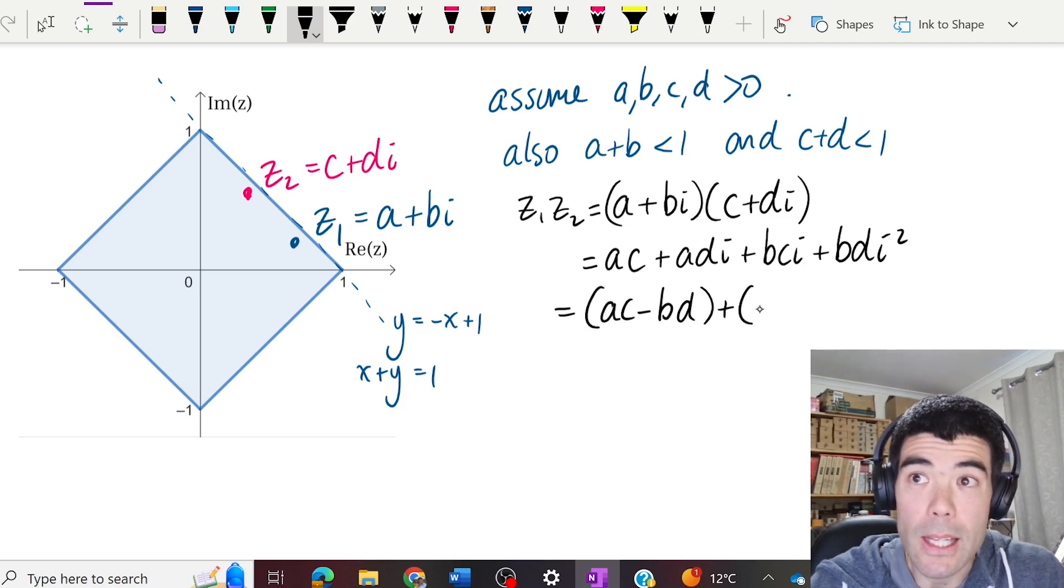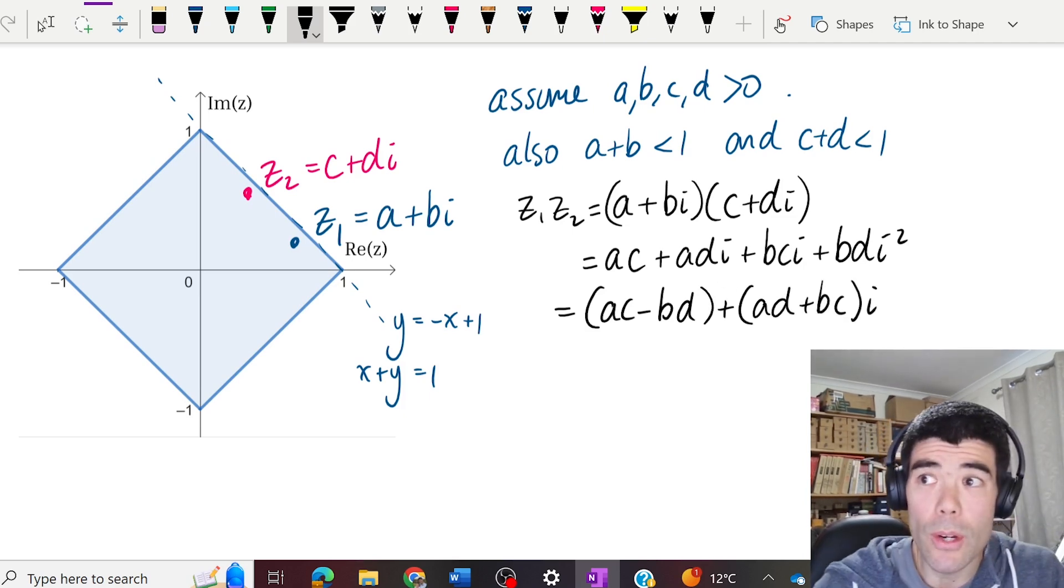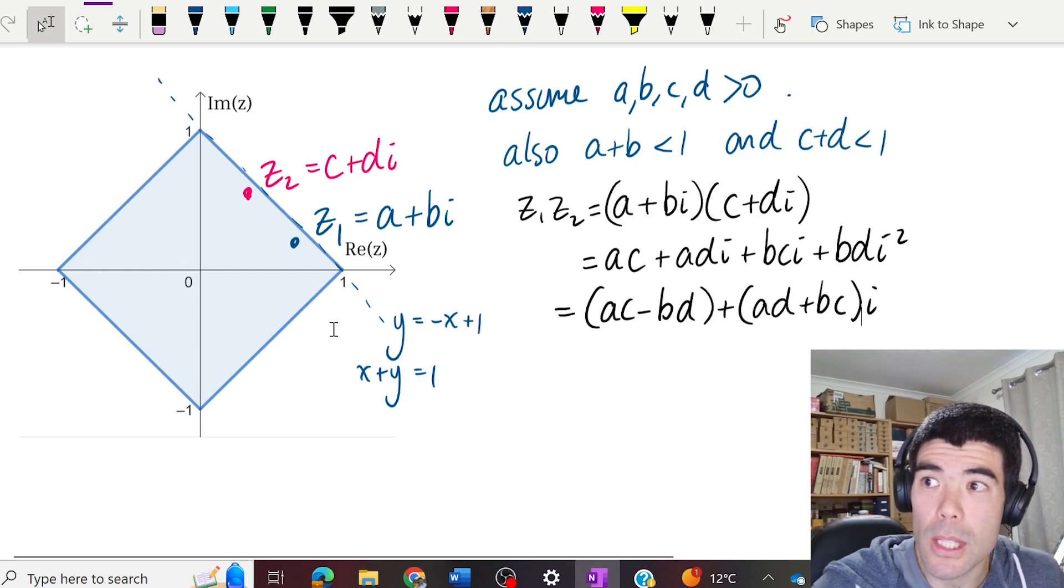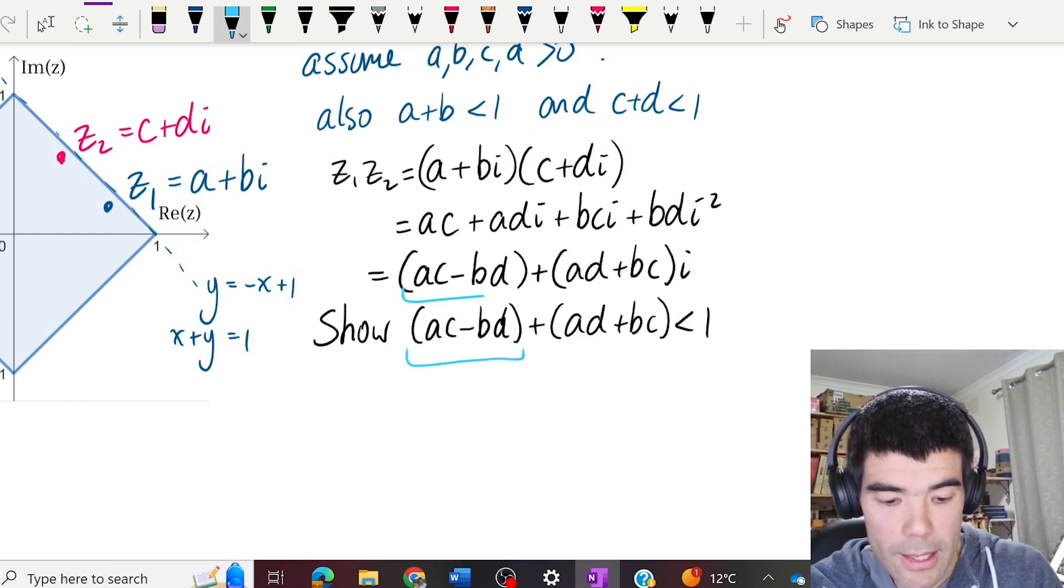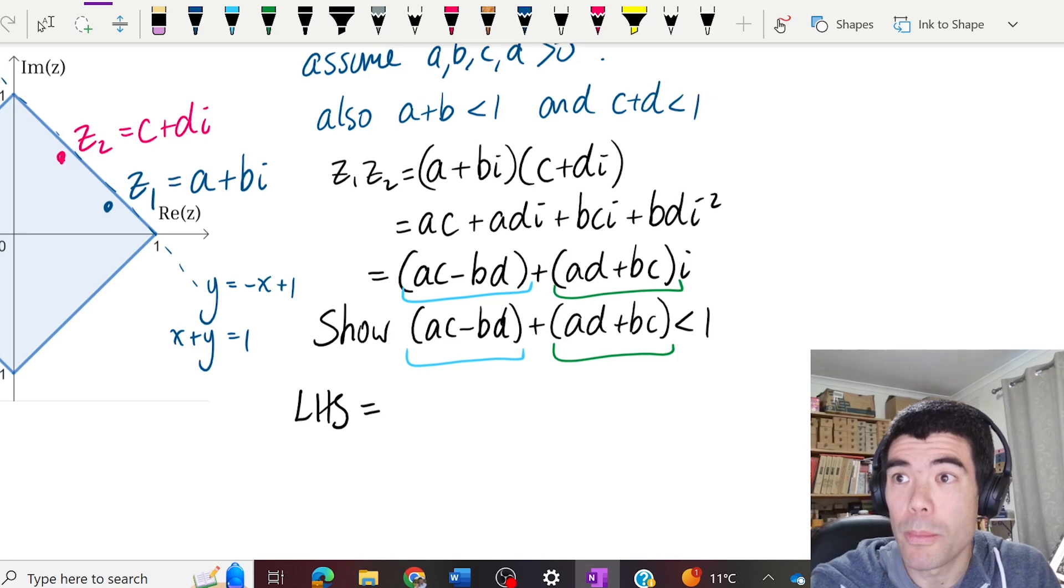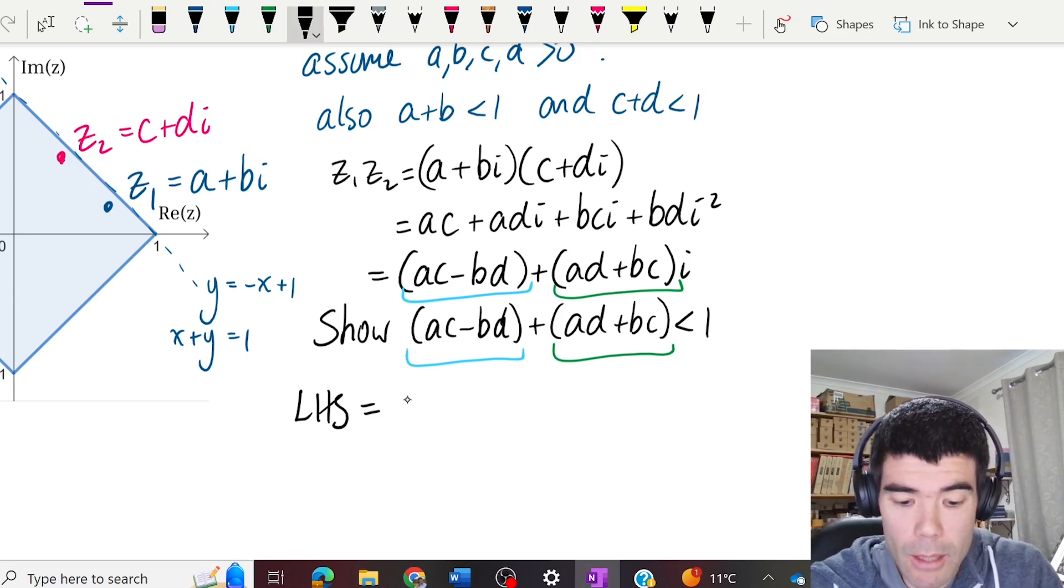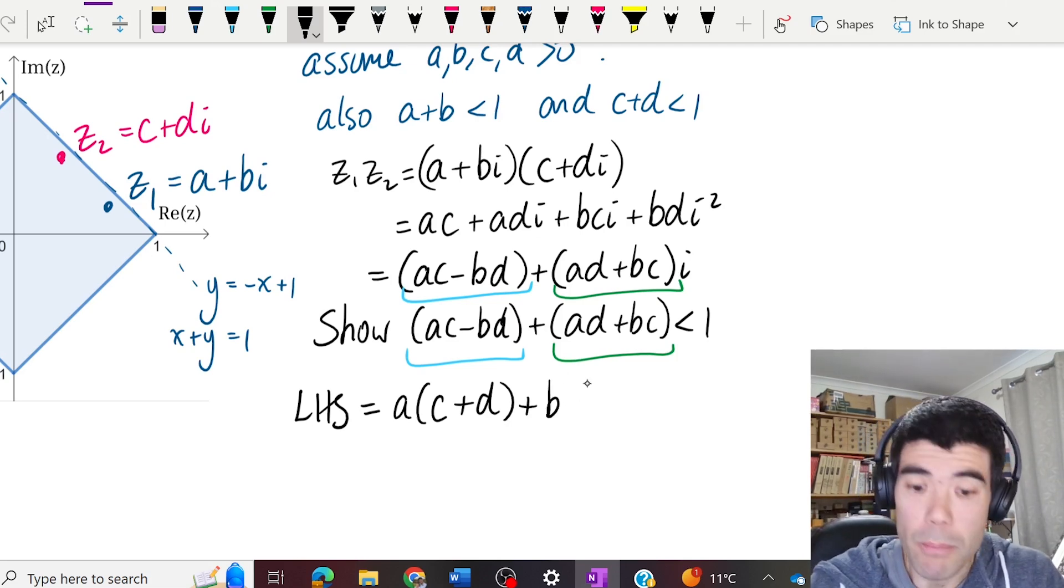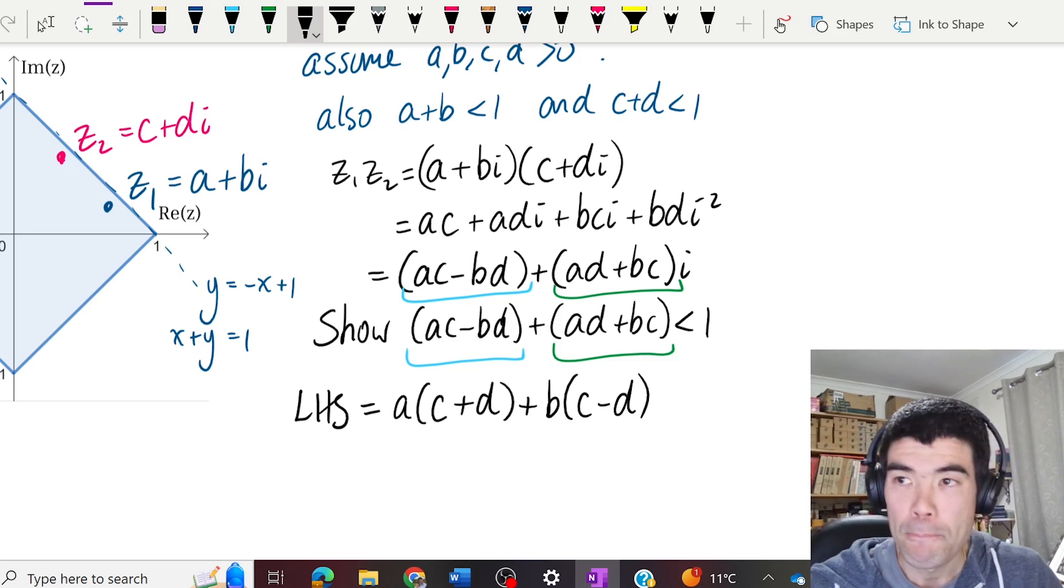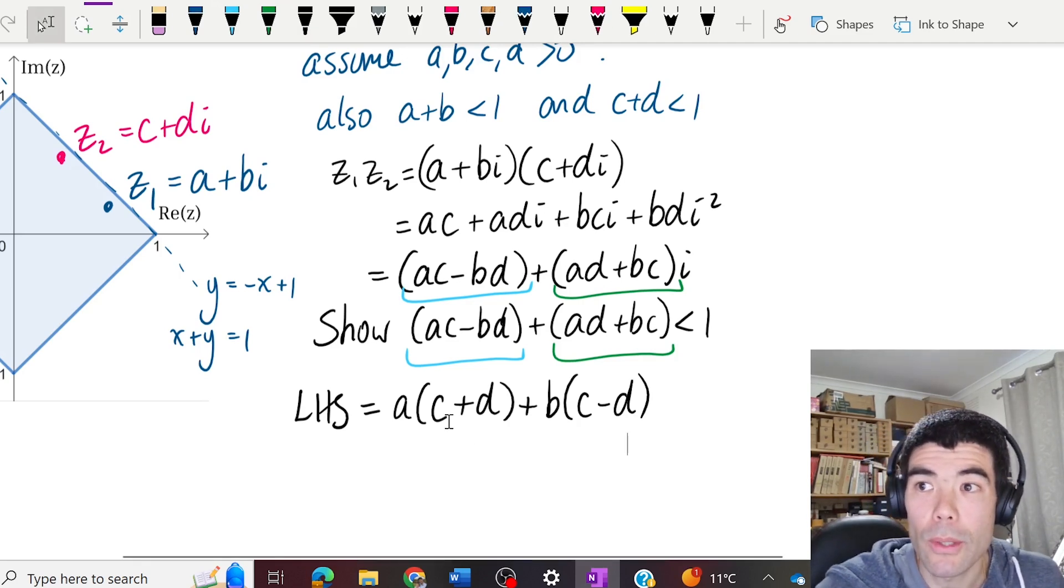And the imaginary part is ad plus bc. And what we want to show now is that we're still below this line. So we want to show that the real part plus the imaginary part is still less than 1. So this is our real part here, and this is our imaginary part. So what we can do is group both terms with an a in them. We'll have a(c plus d), and the second two terms with the b in them will have b(c minus d).